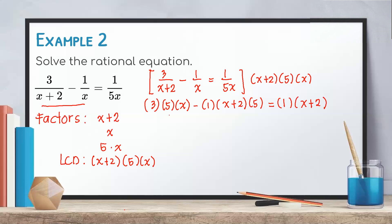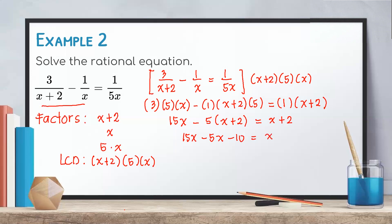Next, simplify each term. So 3 times 5 times x gives us 15x. Copy the minus sign. Then 1 times 5 is 5, times (x + 2): expanding gives x and positive 2 on the right side. Distribute negative 5 to the binomial (x + 2), giving us 15x minus 5x minus 10 equals x plus 2.